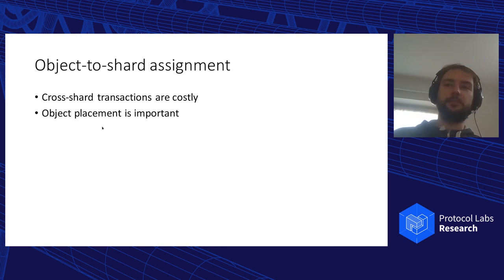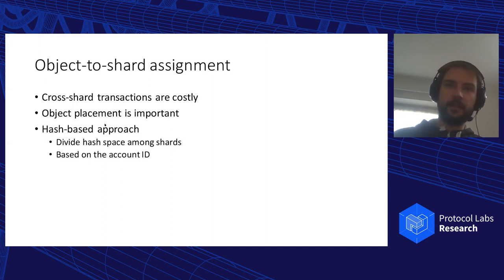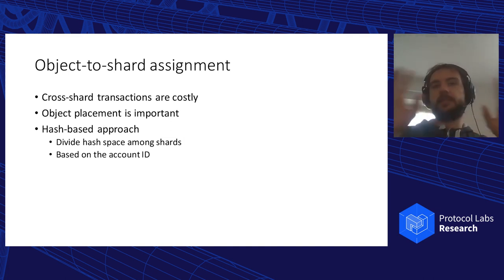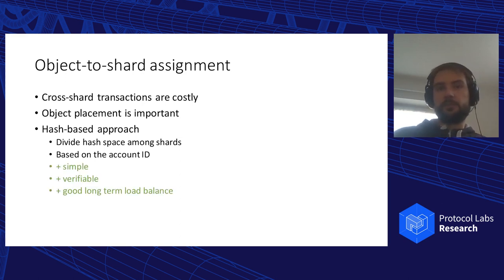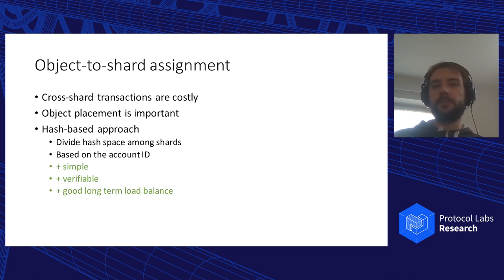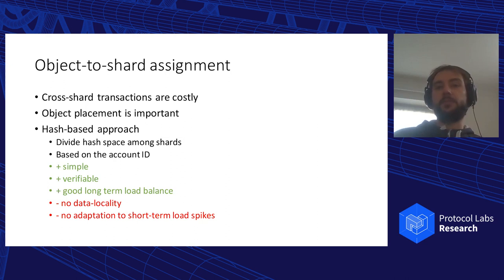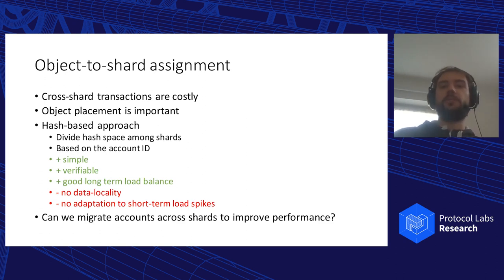How we assign objects to shards can determine the final performance of the blockchain. Currently we use a hash-space approach: we divide the whole hash-space among shards, and based on account ID, assign accounts to shards. This is simple and verifiable — everyone can hash an account ID and determine which shard it belongs to — and provides good long-term load balance. However, we have classic distributed systems problems: no data locality, meaning two accounts that communicate often may be in different shards generating many cross-shard transactions, and we cannot adapt to short-term load spikes. In this work, we ask whether we can migrate accounts on the fly to improve performance and eliminate those problems.